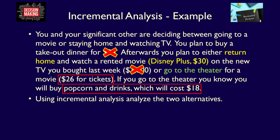Next are the cost of the tickets and the cost of popcorn and drinks at the theatre. Both of these costs are future costs, and you would only incur them if you chose to go to the theatre, which means these costs change between alternatives. Therefore, these costs are relevant because they meet both criteria: they change between alternatives and they are future costs. Both costs apply to the go-to-theatre alternative only.